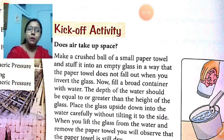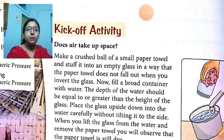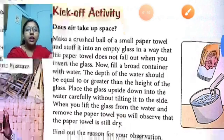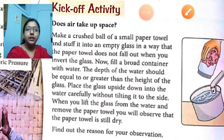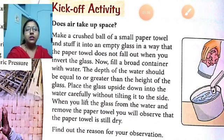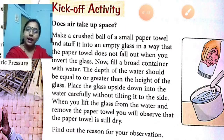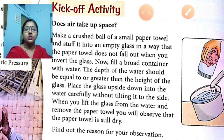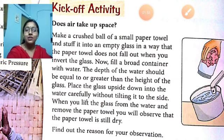We will take a small paper towel, crush it, and put it into an empty glass in such a way that the paper towel does not fall when we invert the glass. Now fill a broad container with water so that the depth of water is equal to or greater than the height of the glass. Then place the glass upside down into the water carefully without tilting to the side, and when you lift the glass from the water and remove the paper towel, you will see that the paper towel is still dry.